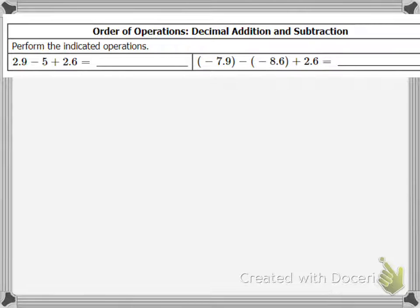Here we are going to look at two examples where we have to use the order of operations to simplify our expressions with decimals. Let's take a look at the problem on the left. Let's split our workspace in half and we'll start with the problem on the left.